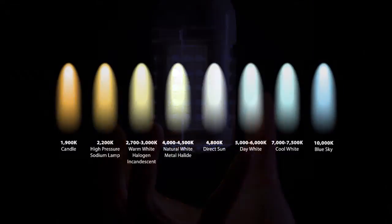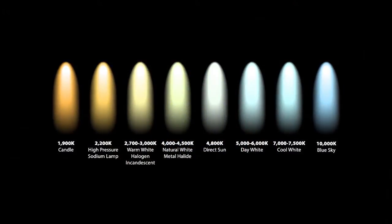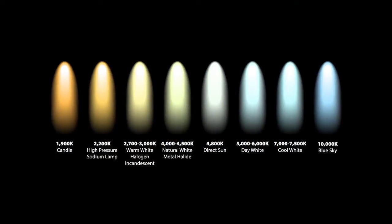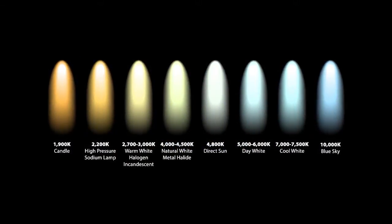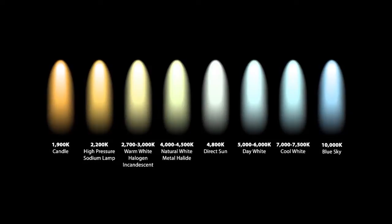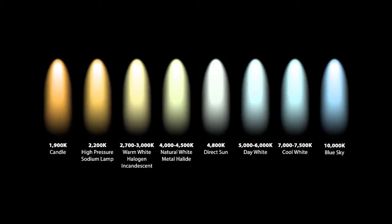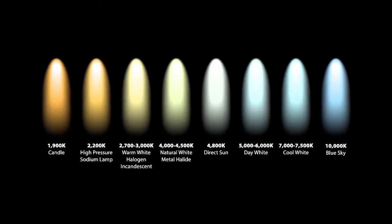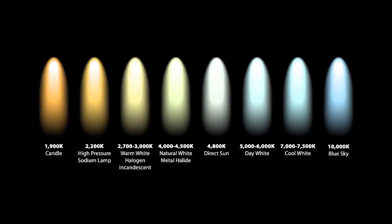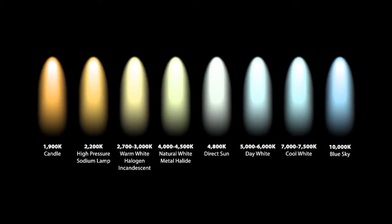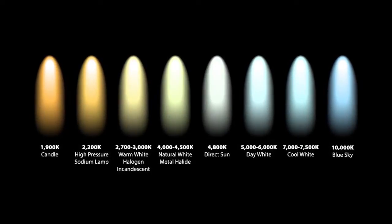When you hear people talking about warm white light, they're talking about a light source with a 2000 to 3000K rating. At a temperature of 2000K, the light will look very orange-yellow in color.